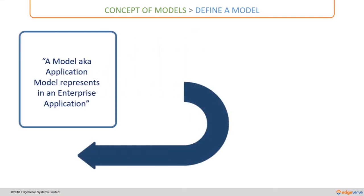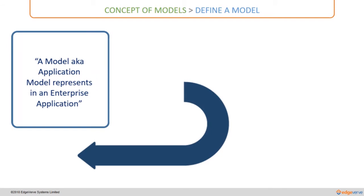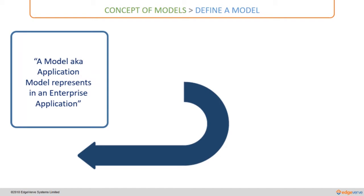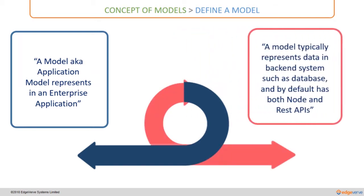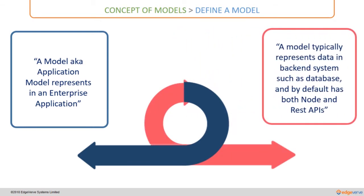A model, also known as an application model, represents business objects in an enterprise application. Since an enterprise application is made up of several business objects, each of these business objects is mapped in the form of models. A model typically represents data in the backend system such as databases, and by default has both Node and REST APIs. Let us understand this statement using a diagram.